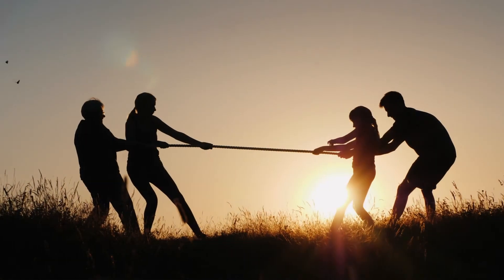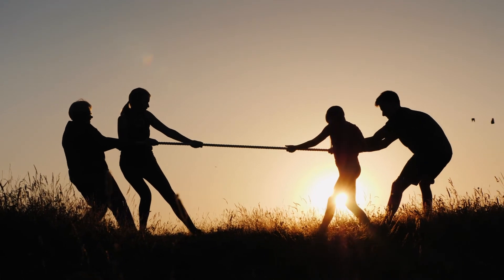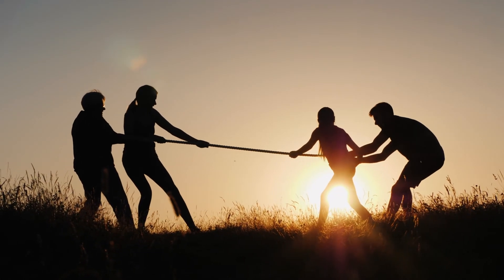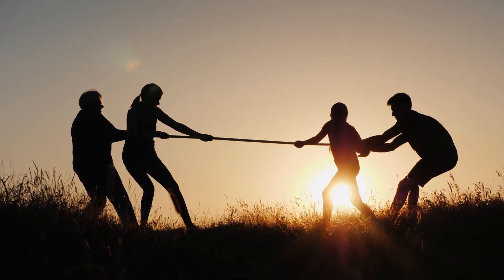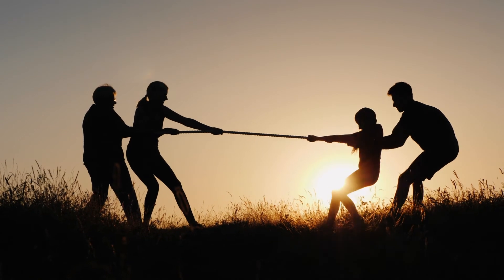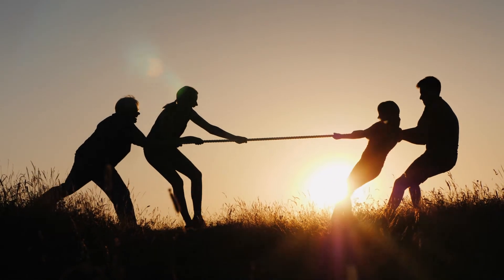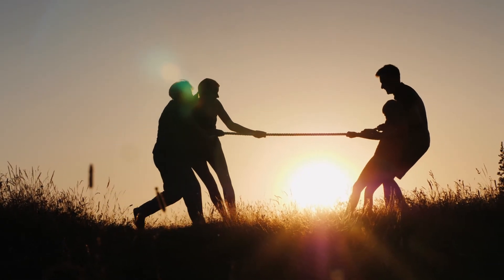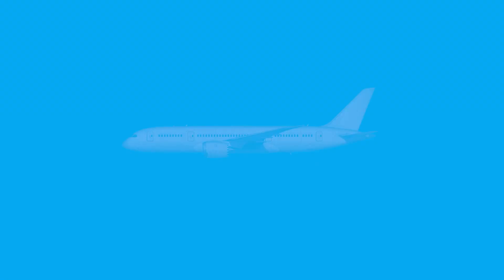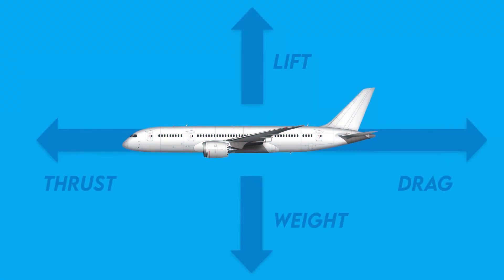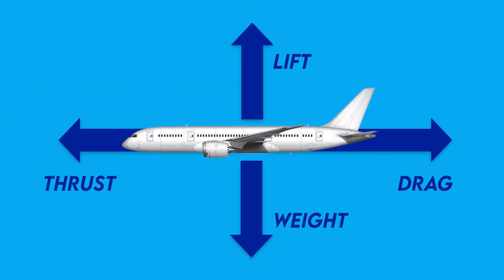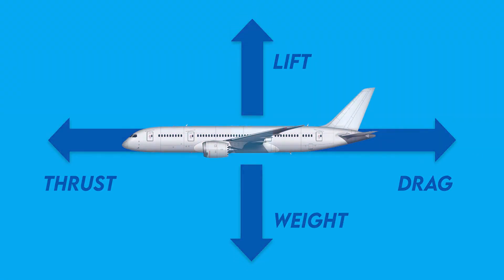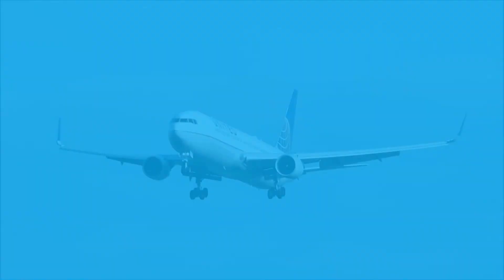A very simple way to think about these forces is to imagine a tug of war. If one team pulls harder, then the other team will move towards them and vice versa. We can apply the same principle to our four forces. In the tug of war of these four forces, the resulting net force would determine the speed and altitude of the plane.